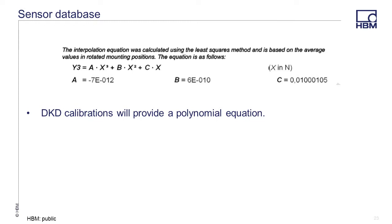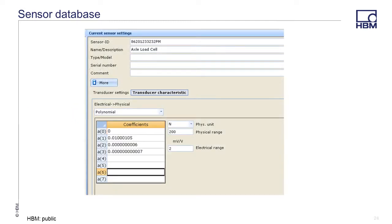DKD calibrations will provide the polynomial coefficients of the sensor output. The sample data can be entered into the sensor database when using the polynomial electrical physical setting. Then enter the coefficients from the DKD calibration.